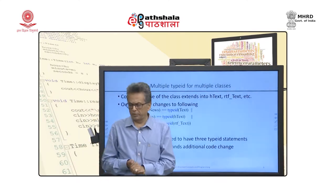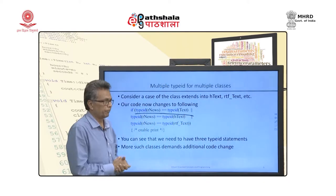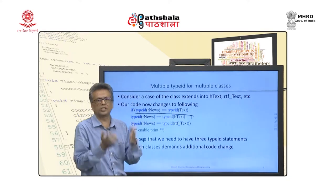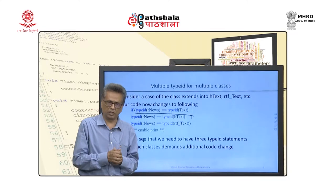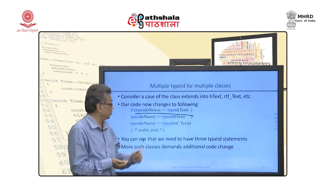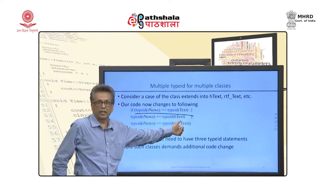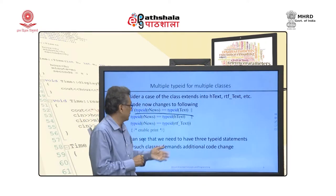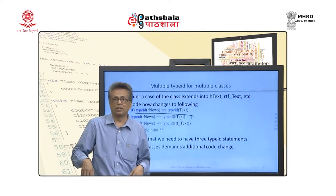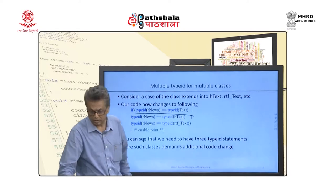Consider the case we saw in the previous module: we had 'if typeID(rnews) == typeID(text), then enable printing.' But what if text is also inherited into HTML text and RTF text? The hierarchy is extended and we need to add more conditions. What if HTML text further inherits into OpenXML and XML? We would have to go and hack into the program and add two more lines — that is troublesome.